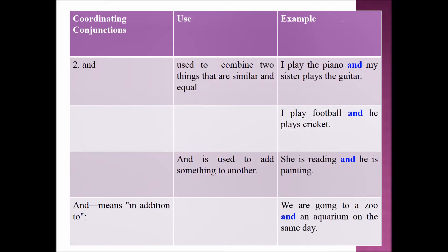Next, we are going to learn about AND. AND is used to combine two things that are similar and equal. Example sentences: 'I play the piano and my sister plays the guitar.' 'I play football and he plays cricket.' AND is also used to add something to another — example: 'She is reading and he is painting.'